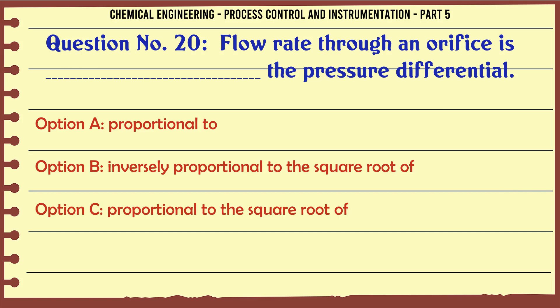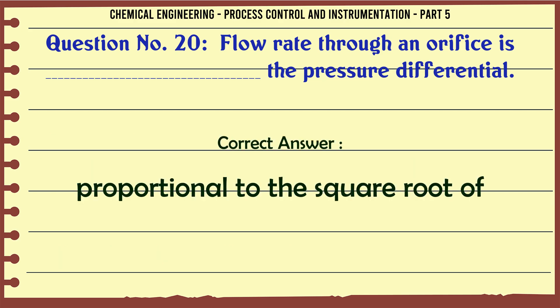Flow rate through an orifice is the pressure differential: A. Proportional to. B. Inversely proportional to the square root of. C. Proportional to the square root of. D. Inversely proportional to the square of. The correct answer is Proportional to the square root of.